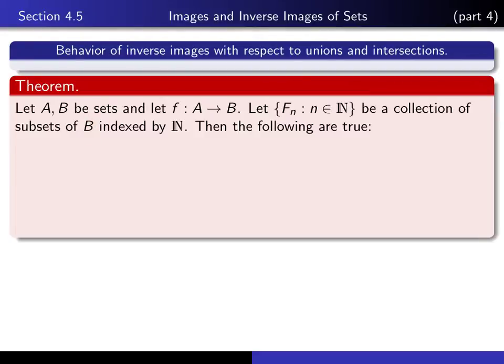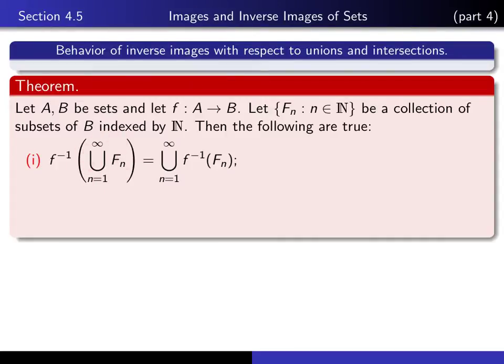Then the following are true. If we first take the union of all of those sets and then take the inverse image, the theorem asserts that that's the same as if we first take the inverse image of each of the sets and take the union of the resulting family. In other words, the operations of taking inverse image and taking unions commute — it doesn't matter what order you do them in.